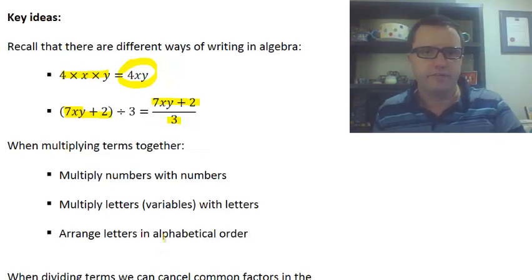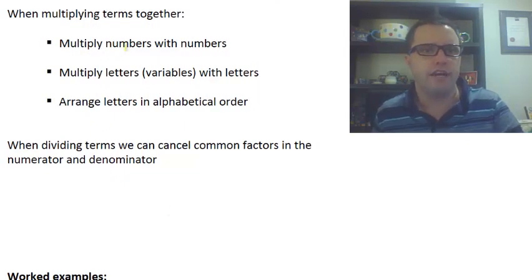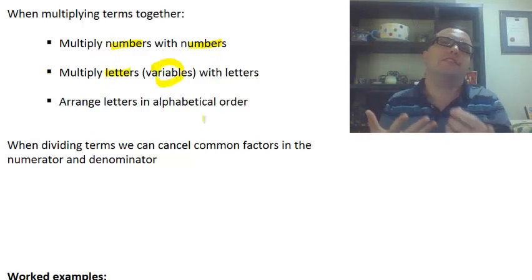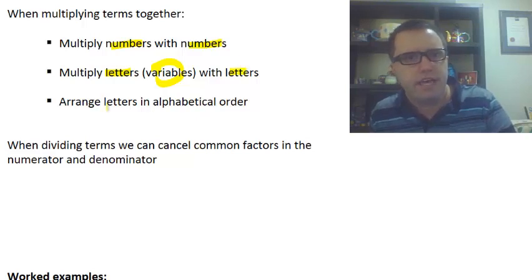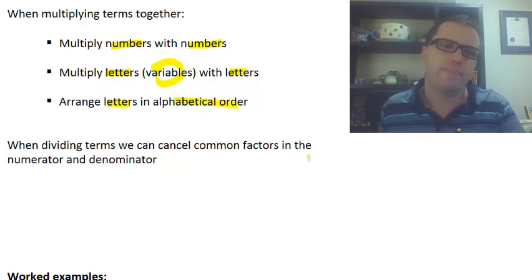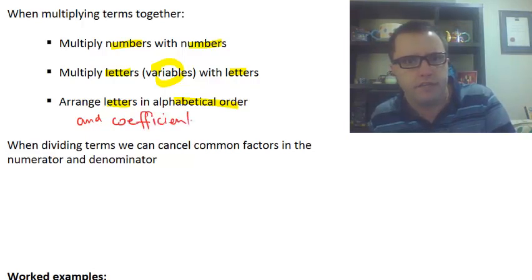Now here's our important things to remember. When multiplying terms together, we multiply first our numbers with numbers. We then multiply our letters—it's variables, but I'm okay with you calling them letters. Multiply letters with letters, and then arrange your letters in alphabetical order. And the coefficient, remember that's the number, goes out to the front.